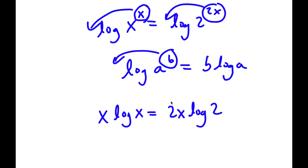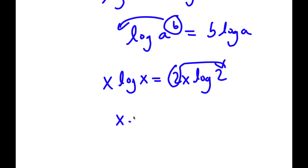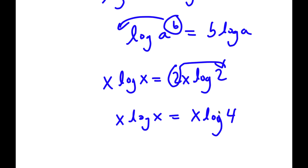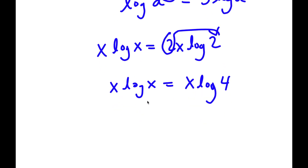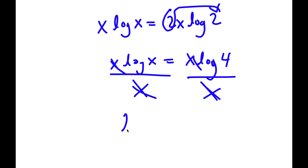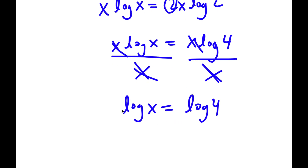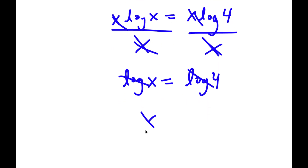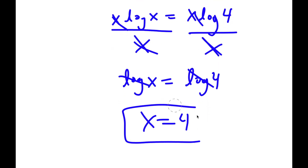Sorry, I'm going to move this back — we didn't need to move that. So I have x times log x is equal to x times log 2 to the power of 2, which is 4. Now, if I divide both sides by x, these two cancel out, and I'm left with log x is equal to log 4. And if the logs cancel out, I get x is equal to 4. So that is my second method.